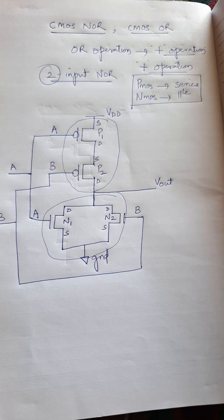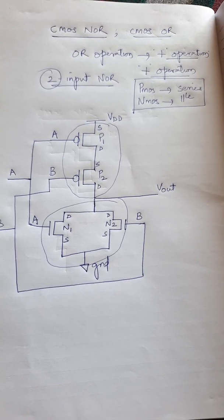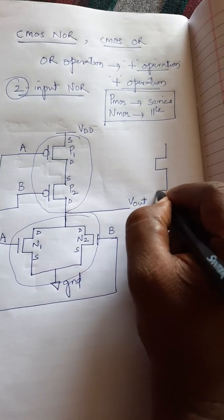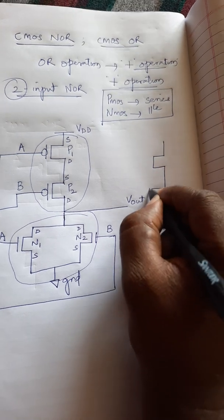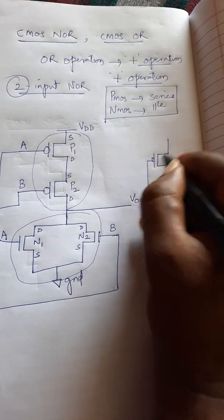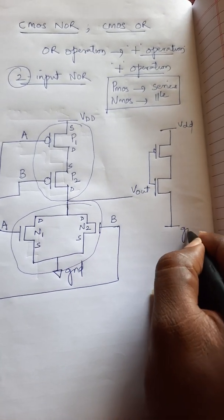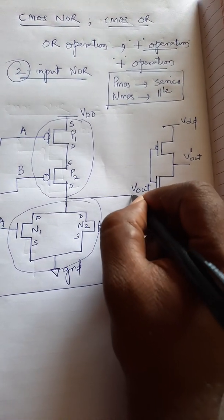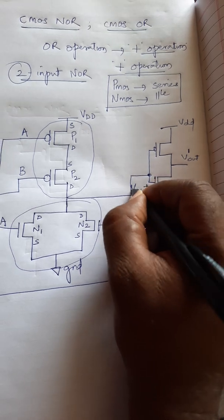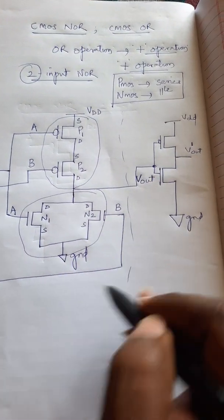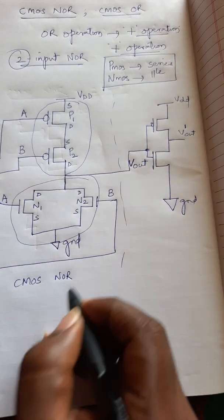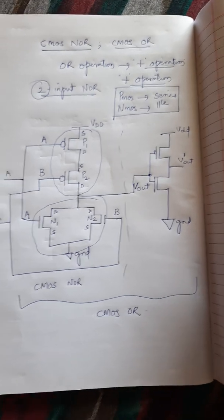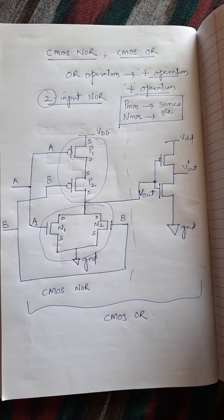For the OR gate: CMOS NOR is nothing but a NOT of the OR gate. NOT is nothing but an inverter. So if you add a CMOS inverter — one PMOS connected in series with one NMOS — to the NOR output, that becomes the final output V-out. This completes the CMOS OR schematic structure. The part up to the NOR is the CMOS NOR structure, and the complete circuit is the CMOS OR structure.